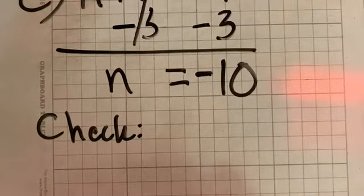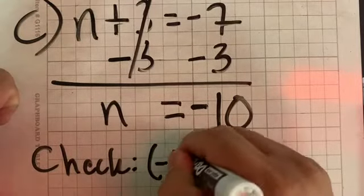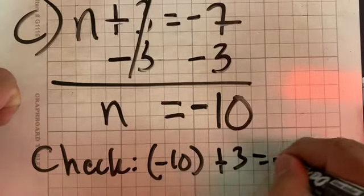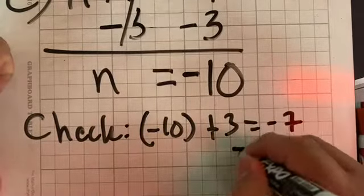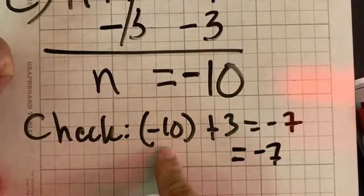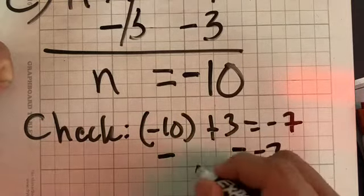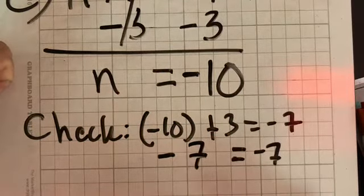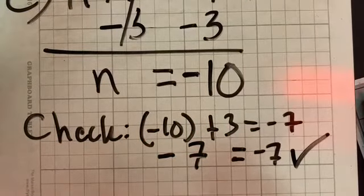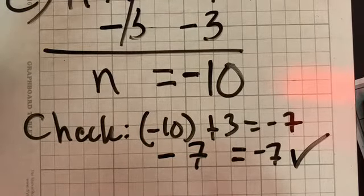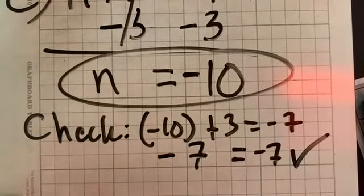We're going to check the work. I'm going to take the original problem. But anywhere I have N, I'm going to rewrite it with negative 10. So negative 10 plus 3. Since the bigger number is a negative, our final answer should still be a negative. And then combining it with that positive 3, you should get negative 7. So negative 7 does equal negative 7. That is a true statement. So we are done with this problem because since it's a true statement, N does equal negative 10.